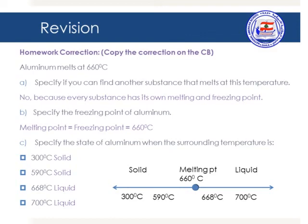Part C: specify the state of aluminum when the surrounding temperature is 300 degrees Celsius. We have to compare this temperature to the melting point. 300 is below 660, which means it's a solid. Similarly, 590 degrees Celsius is also a solid, 668 degrees Celsius is a liquid, and 700 degrees Celsius is also a liquid.